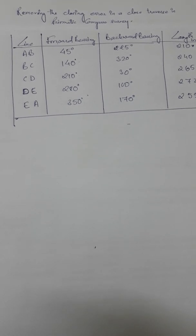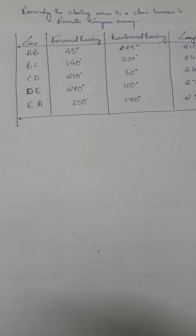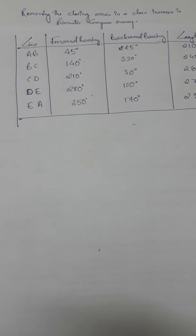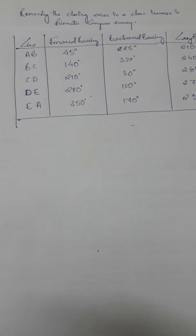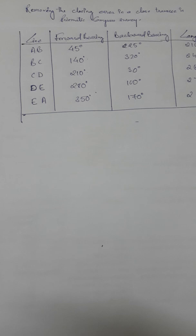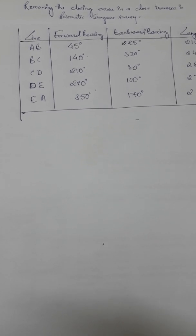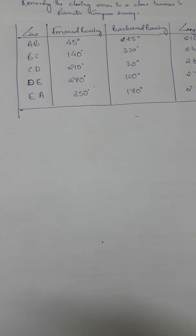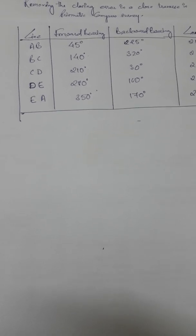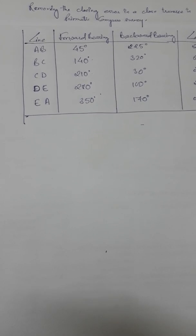Hello viewers. Today I'm going to tell you how to remove the closing error in a closed traverse during prismatic compass survey. Before this video, I have uploaded another video telling how to correct the errors due to local attraction in forward and backward bearing. You can see that video before coming to this one.